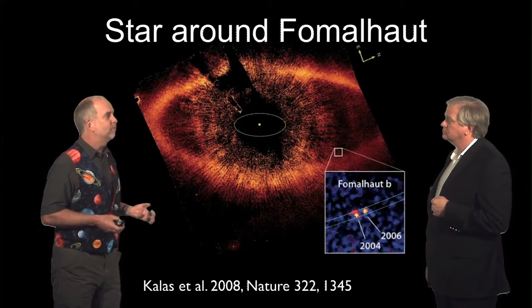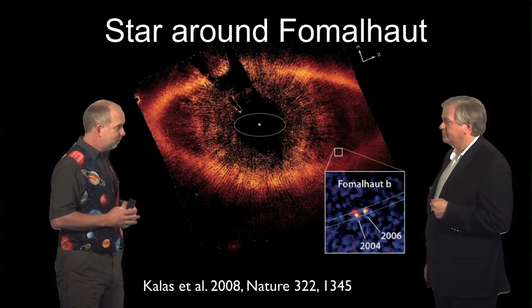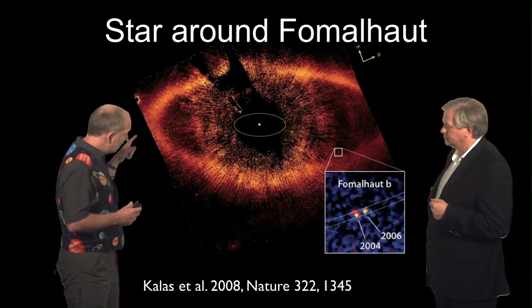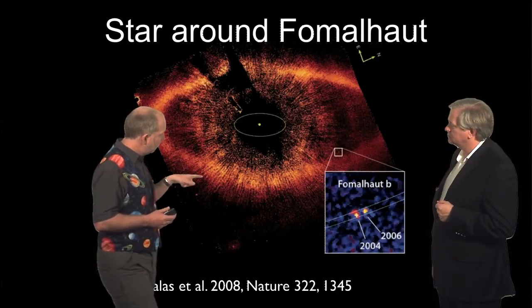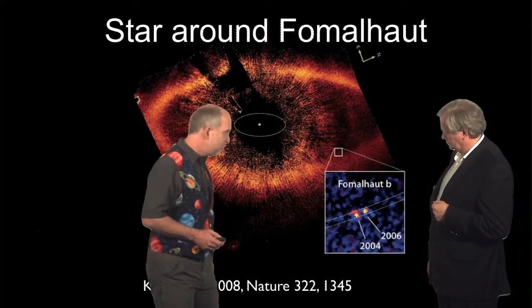It's another bright star, Fomalhaut, another star with a debris disk. So very similar to HD 8799. And when it was looked at with the Hubble Space Telescope you can see very clearly this debris disk and you also see a little dot just inside the debris disk that seems to be moving.